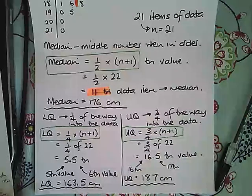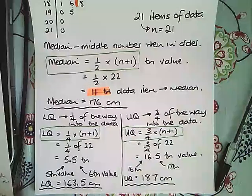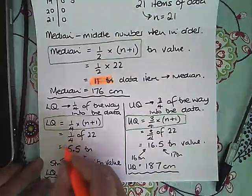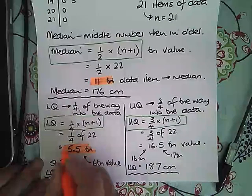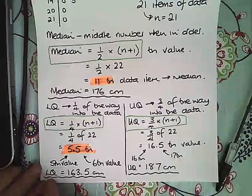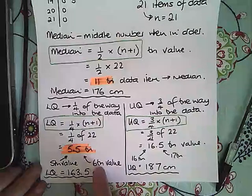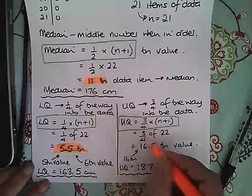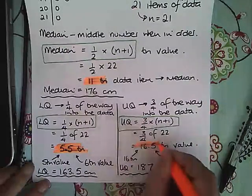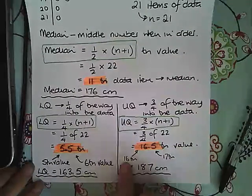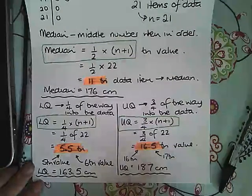And you work through your stem and leaf diagram to find the 11th value. Just like on here, the lower quartile is between the 5th value and the 6th value. It is not 5.5, it is the number that lies between the 5th value and the 6th value. And again on the upper quartile, it is not 16.5. It is the value that lies between the 16th piece of data and the 17th piece of data.